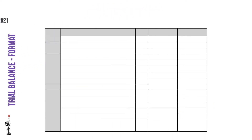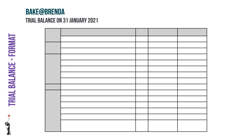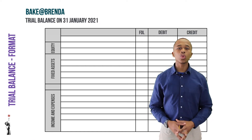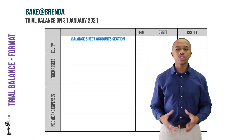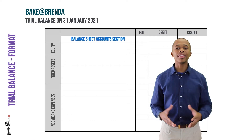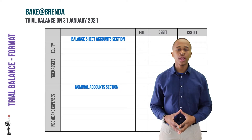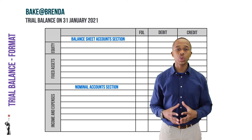Let's look at the format of a trial balance. We start with the heading: the name of the business — in this case, Bake at Brenda's — then 'Trial Balance' and the date, 31 January 2021.